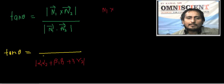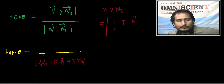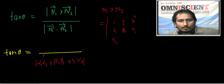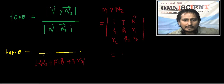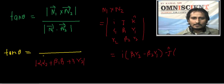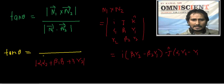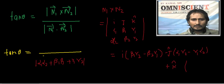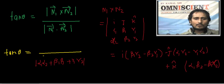n1 × n2 के लिए determinant का use करते हैं: | i  j  k ; α₁ β₁ γ₁ ; α₂ β₂ γ₂ |. यह vector = i(β₁γ₂ - β₂γ₁) - j(α₁γ₂ - α₂γ₁) + k(α₁β₂ - β₁α₂). इसका mod = √(x₀² + y₀² + z₀²), जहाँ x₀ = β₁γ₂ - β₂γ₁, y₀ = α₁γ₂ - α₂γ₁, z₀ = α₁β₂ - β₁α₂.